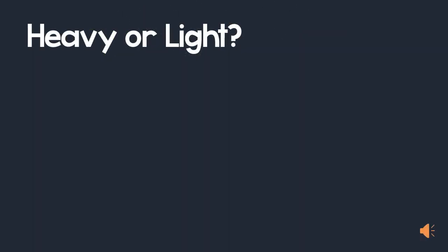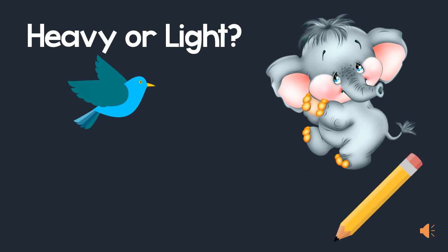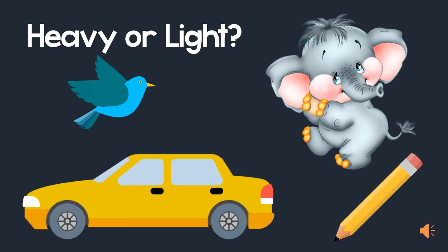Now let me show you some pictures of items and you should think if each one is heavy or light. Do you think an elephant is heavy or light? Correct, it is heavy. Do you think a bird is heavy or light? Right, it is light. Do you think a pencil is heavy or light? It is light. And finally, do you think a car is heavy or light? Of course, it is very heavy.